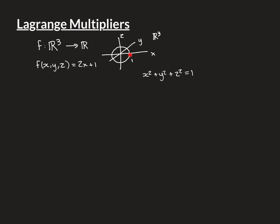If you take the point (1, 0, 0), that's going to be mapped onto 2×1 + 1 = 3. Not just that point — actually all the points with the same x value, so you can vary y and z whatever you like. All the points in the plane parallel to the y-z plane through x=1 are all going to be mapped onto 3.